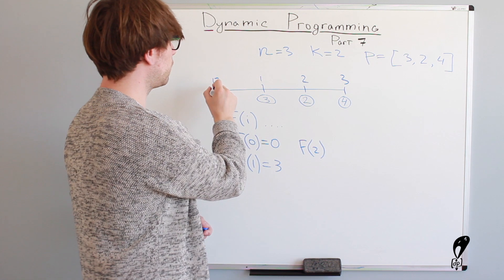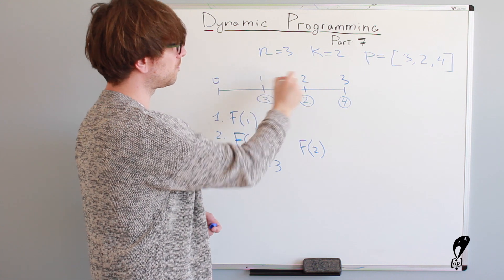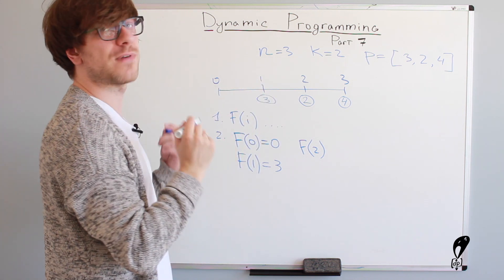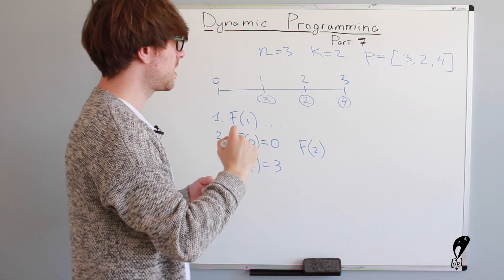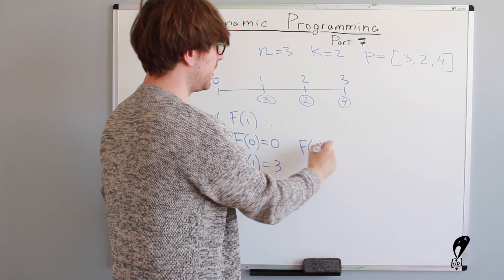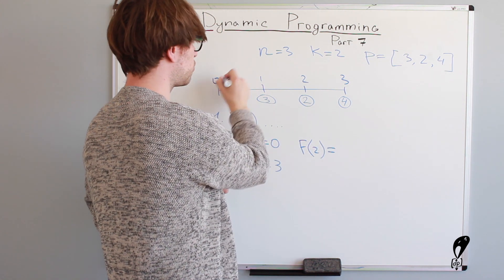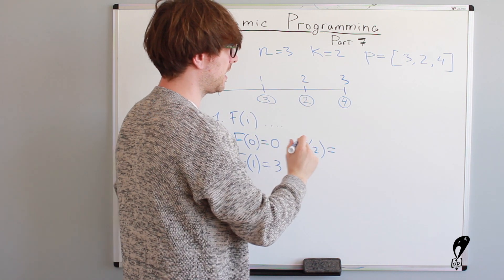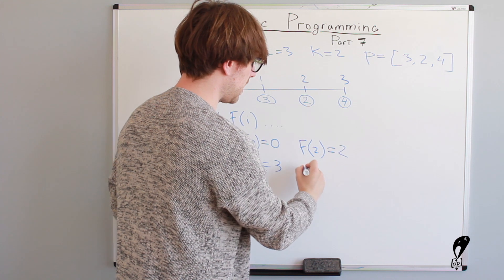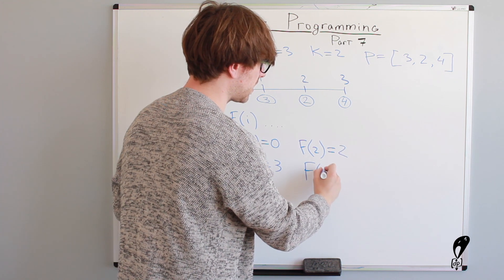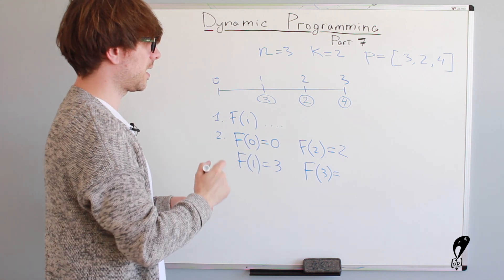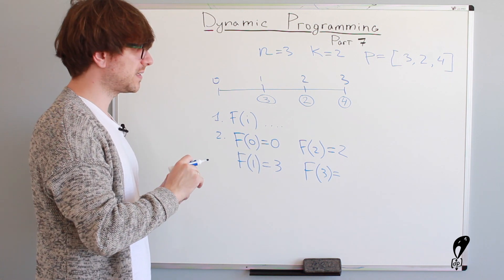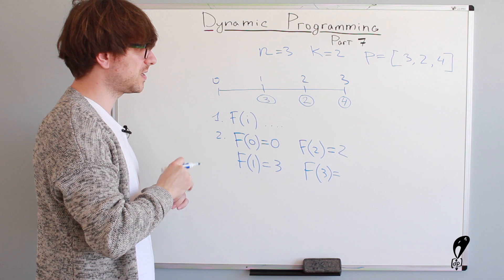How much we got to pay to get to the second step? Well, we can go to the first step first and then go to the second one, but that would be five dollars in total. Since we're allowed to make two jumps at a time, we can just jump straight to the second step and just pay two dollars. And then f of three, we don't have to calculate it, but it's always good to do a few calculations, a few base cases so that to have a better understanding of the problem.